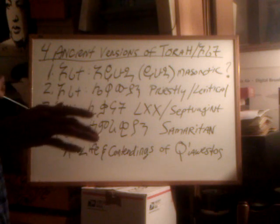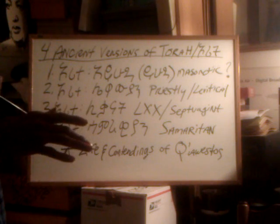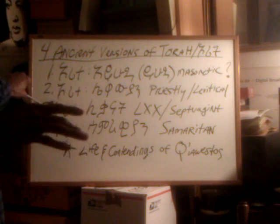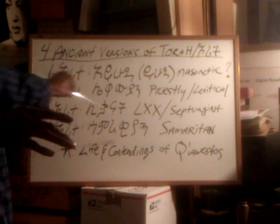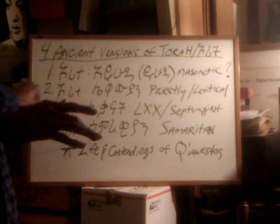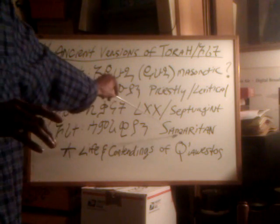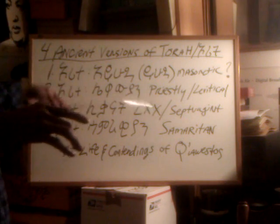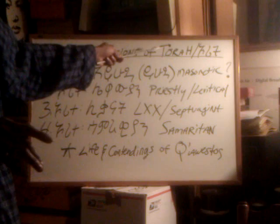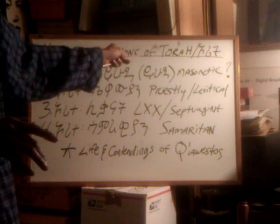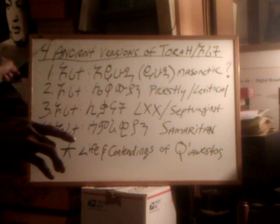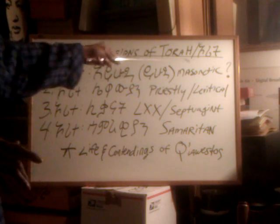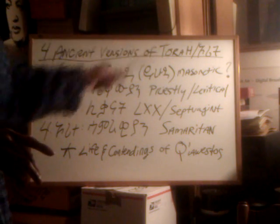Lastly but not least, we have the Orit Samarawiyan, the Samaritan Orit or the Samaritan Torah. So there are four ancient versions of the Torah.